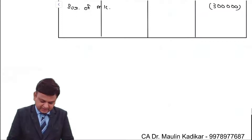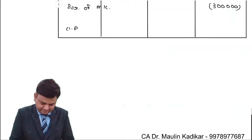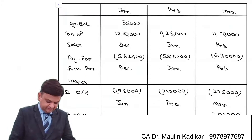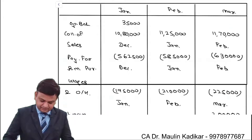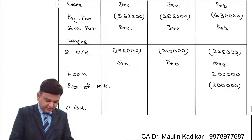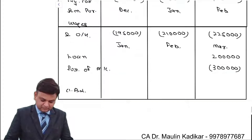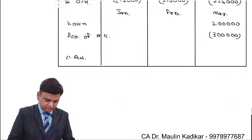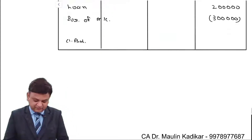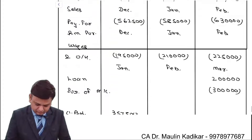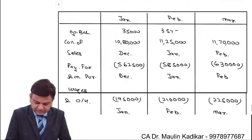For the closing balance for the month of January: 35,000 plus 10,80,000 minus 5,62,500 minus 1,95,000, which comes to 3,57,500.